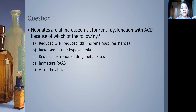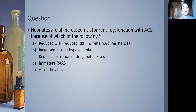Question one: Neonates are at increased risk for renal dysfunction with ACE inhibitors because of which of the following? Options: reduced glomerular filtration rate from reduced blood flow; increased risk of hypovolemia; diminished excretion of drug metabolites; immature renin-aldosterone system; or all of the above. The answer is all of the above — all these reasons are correct.